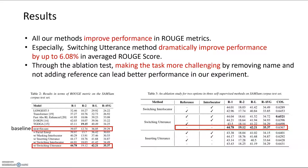This is our experiment result. The overall method shows improvement in ROUGE metrics. Especially, the switching utterance method dramatically improved performance by up to 6.08% in average ROUGE score. In addition, we conducted ablation studies and confirmed that making the task more challenging by removing the name of the interlocutor and not adding reference can lead to better performance in our experiments. Thank you for listening.